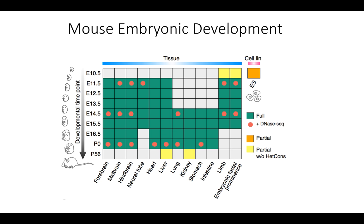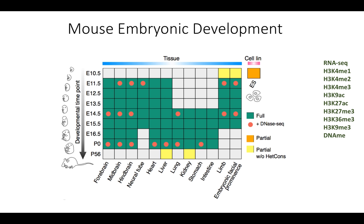One highlight of the mouse component of ENCODE 3 is Bing Ren's project from UCSD. His team harvested mouse tissues across developmental time points from embryonic day E10.5 to adult and across tissue types — tissues that are difficult to obtain for humans. Each tissue was assayed by eight histone marks, DNA methylation via whole genome bisulfite sequencing, and RNA-seq, making this a very rich dataset.